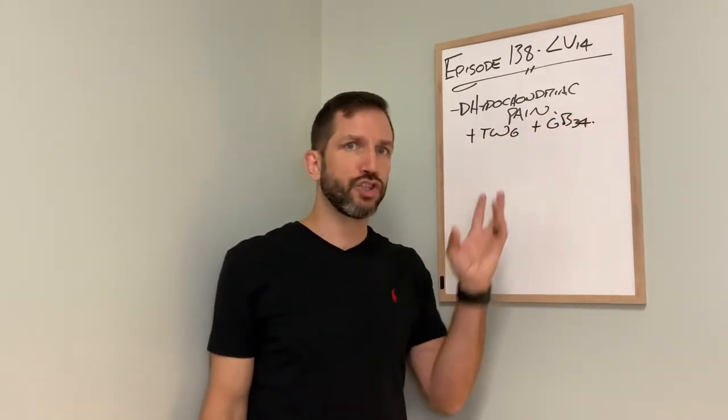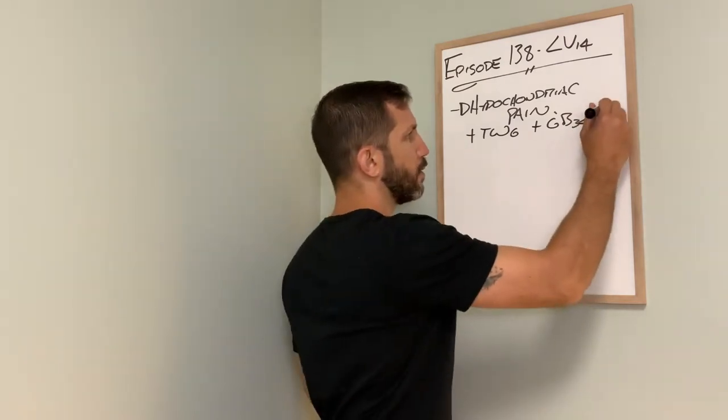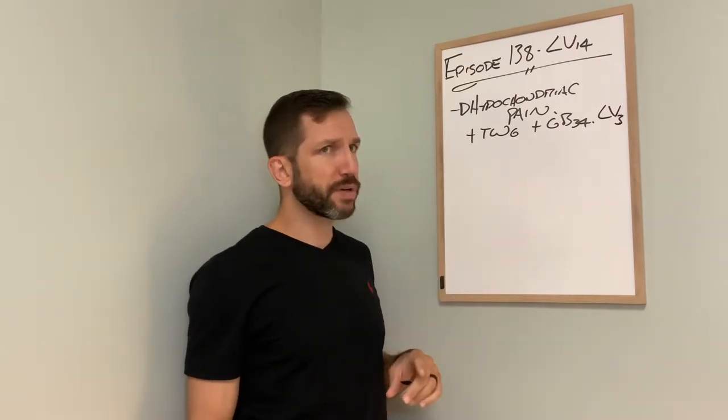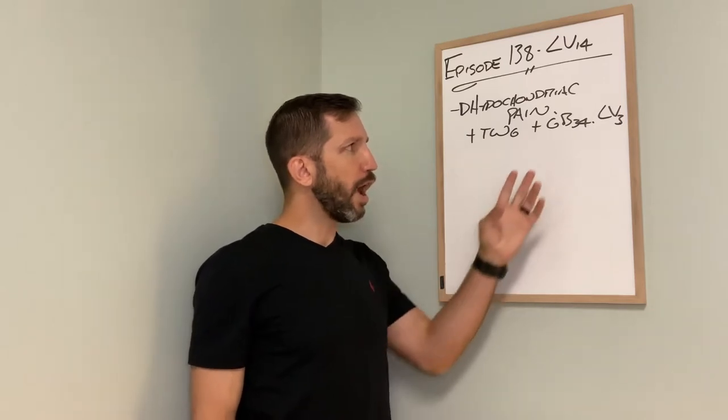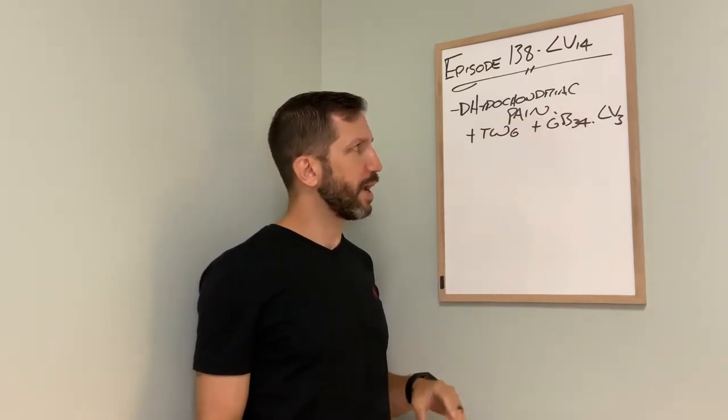Often hypochondriac pain is due to liver chi stagnation, so we could also add in a liver 3. But that being said, triple warmer 6 moves chi in the lower warmer, and GB34 is going to help move a little bit of liver chi, and it's great for hypochondriac pain as well.